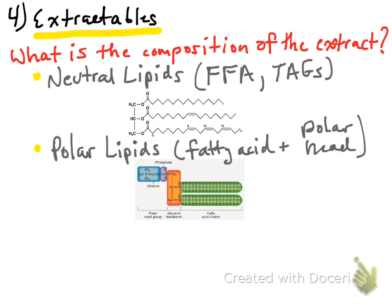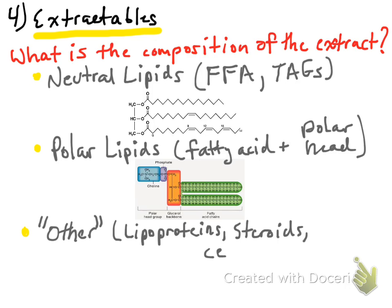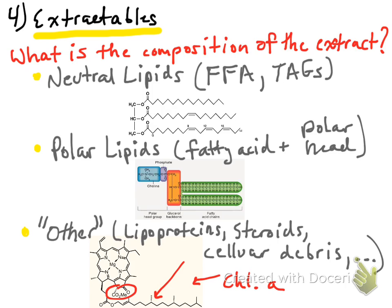We can also have a glucose group or a sphingo group as the polar head group — a variety of head groups are possible on polar lipids, and the head group is what changes the polarity of the lipid. The last class is simply called 'other' by researchers: any component that is lipid-based or doesn't fall under a standard lipid category, including lipoproteins, steroids, and cellular debris. An interesting example is chlorophyll A, a pigment molecule in plants and algae — which is why extractions from plant samples are generally green.